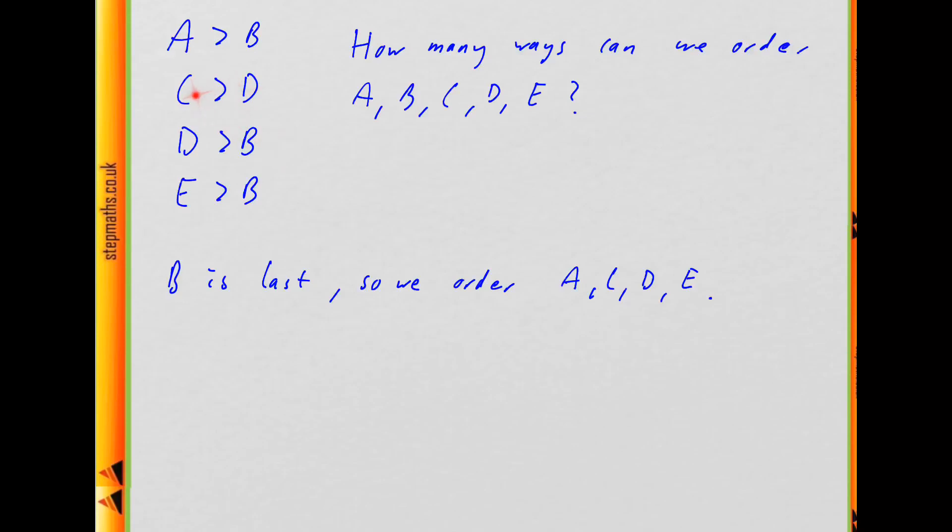But are there any other constraints on the orders? Well, yes, because we know C is greater than D. So we don't know anything about the relationships between A, D and E, but we do know that C is greater than D. So we have that as an extra constraint on the order.